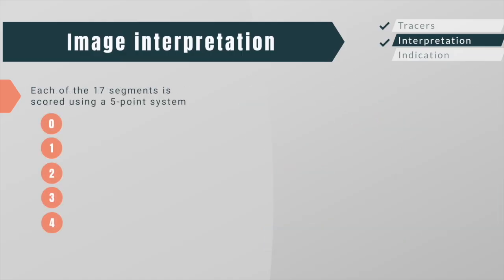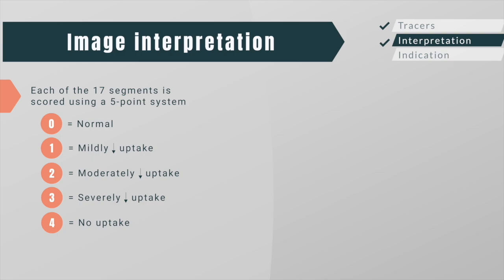Each of the 17 segments is scored using a 5-point system: 0 is normal; 1, 2, and 3 mean mildly, moderately, and severely reduced uptake; and 4 means no tracer uptake is visible. Perfusion defects with scores of 3 or 4 can be reported as consistent with a critical coronary artery stenosis.